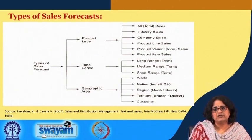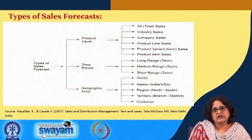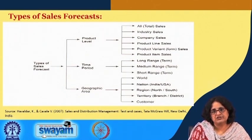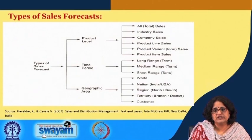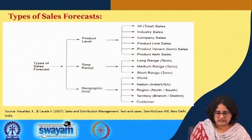Similarly, for time period, a sales forecast could be long-range or long-term, medium-range or medium-term, or short-range and short-term. For geographic area, it could be the global market, continent-wise, nations or countries, regions like north and south, territories constituting different branches or districts, and even at an individual level. This covers the different levels at which sales forecasts can be done.